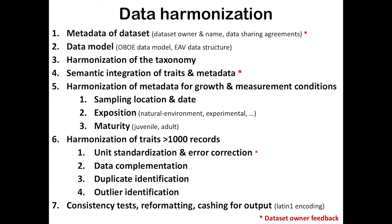Then we do data complementation: if you have leaf nitrogen concentration and you have SLA, you can calculate leaf nitrogen on an area basis, and we add this data to the database. Then we identify duplicates, because some data made it into the database via several pathways and appear more than once. Finally we do some consistency tests, reformatting and caching for output so that everything is released to data requesters in one consistent format.